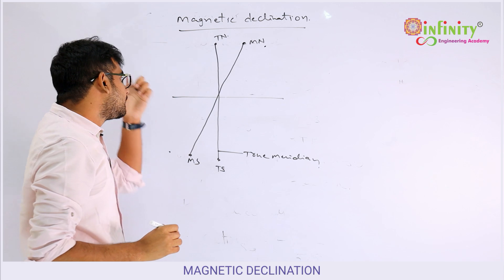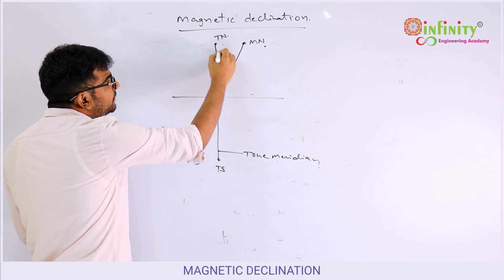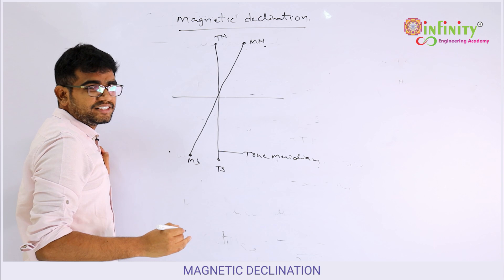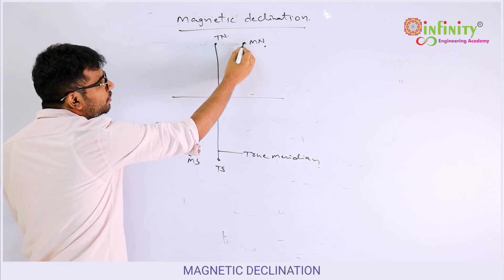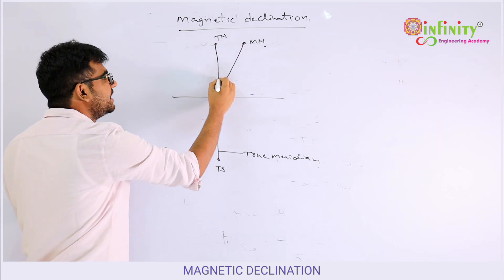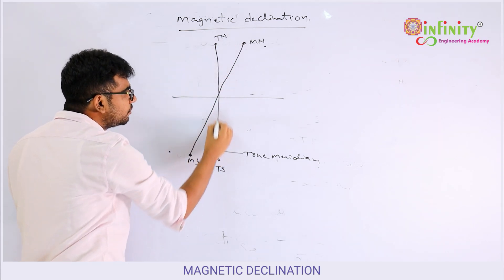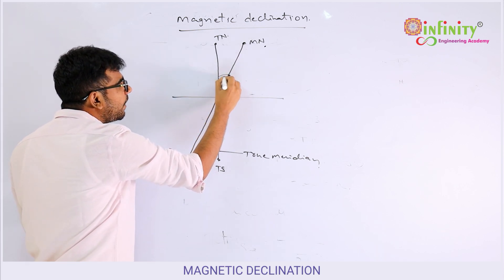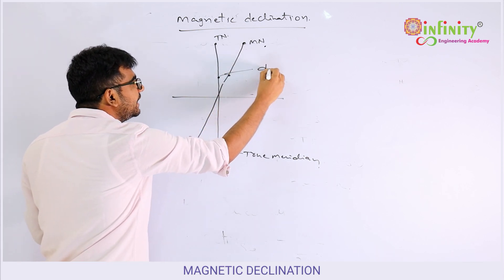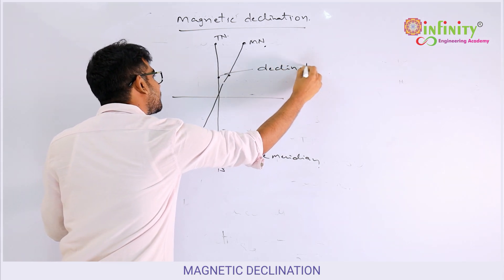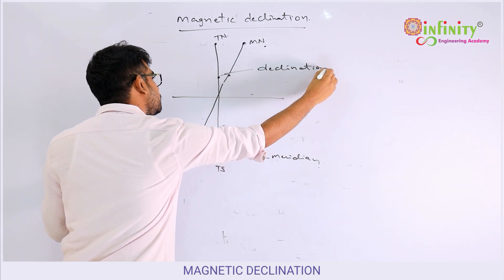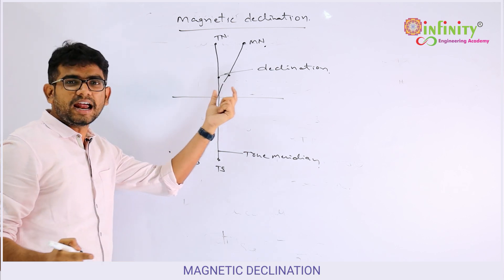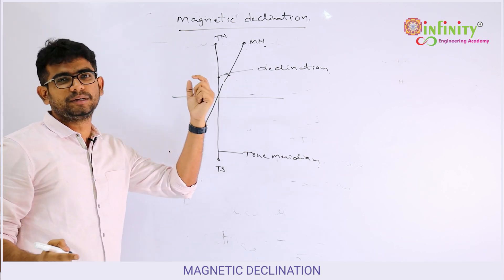Now, whatever the angle between this true meridian and magnetic meridian is — this is the true meridian, and this is the magnetic meridian — this angle we call as declination. So what do you mean by declination? It is the angle between the true meridian and magnetic meridian.